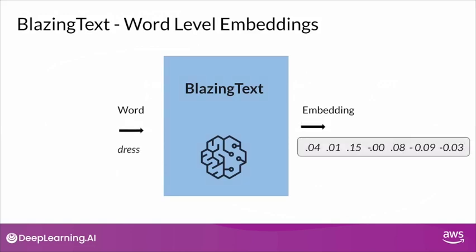Take for example the word 'dress'. The embedding that is generated by BlazingText for the word 'dress' is shown on the screen. Regardless of where the word 'dress' appears in a sentence, the embedding generated is always going to be the same, which means BlazingText is not really capturing the context of the word 'dress' in a sentence.